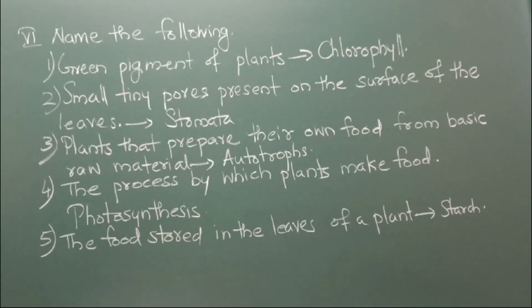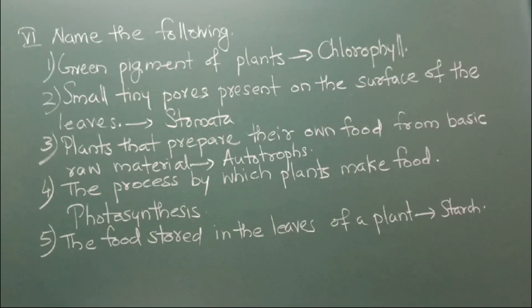Number 4: The process by which plants make food — it is photosynthesis. Number 5: The food stored in the leaves of a plant — that is starch. If you have any doubt regarding this topic, please mention it in the comment box so that I can explain to you again. If you like my video, please like, share and subscribe. Press the bell icon to stay tuned.